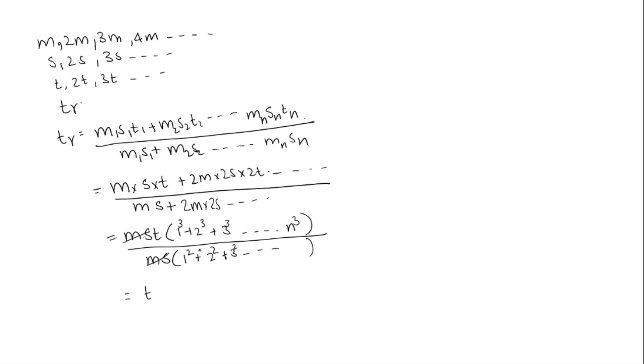We know the formula for 1 cubed plus 2 cubed plus 3 cubed and so on till N cubed is N squared times N plus 1 squared divided by 4.